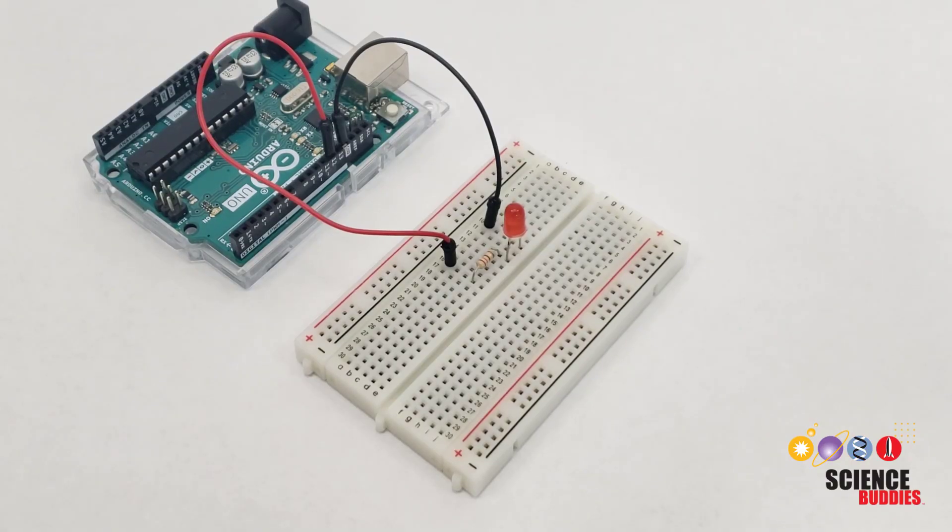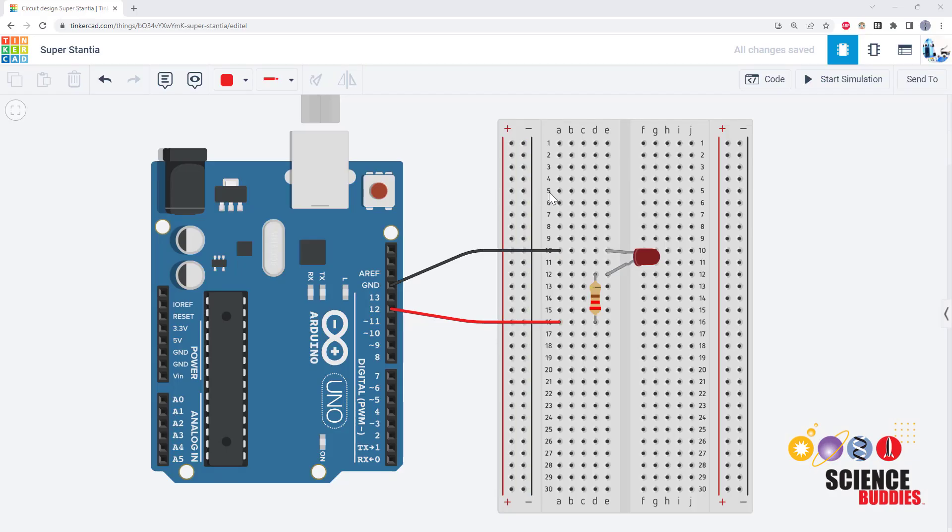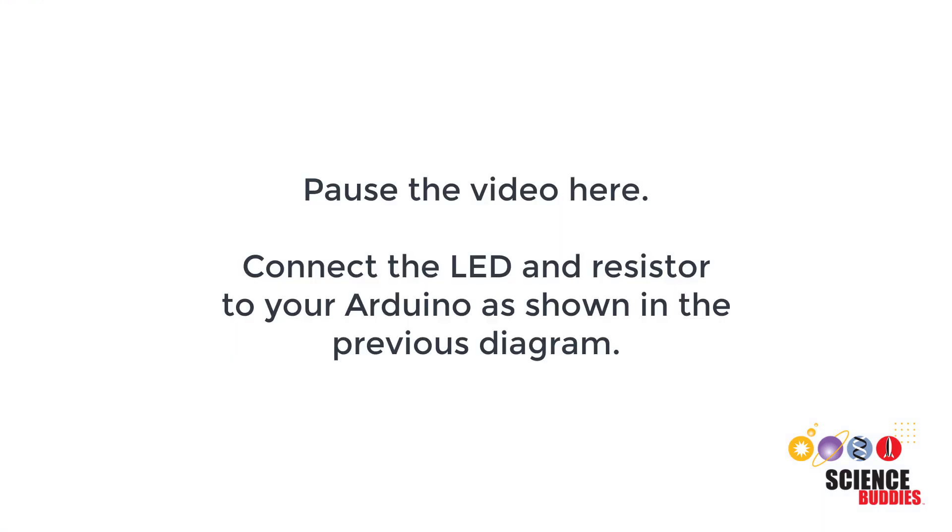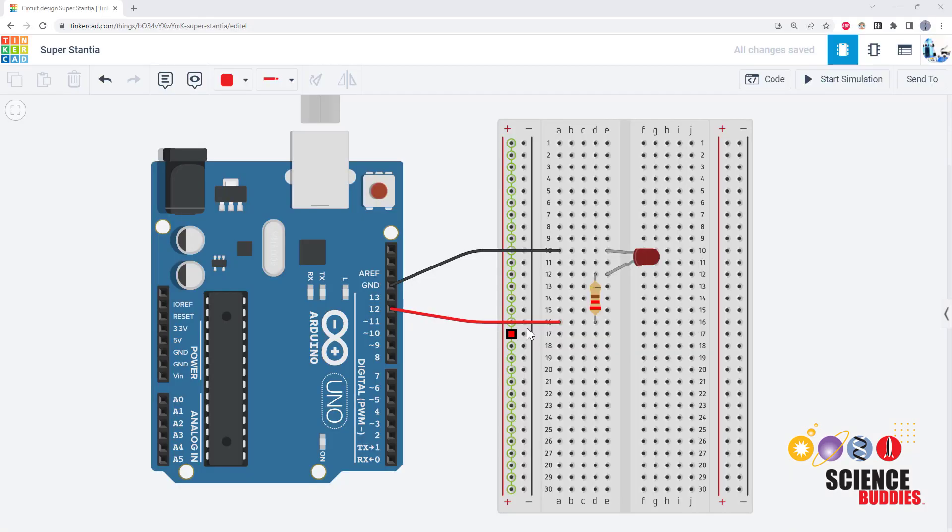Now that we've built the circuit, we're ready to write the code to blink the LED. This is a breadboard diagram made with a computer program. It makes it a little easier to see exactly which hole each part goes in on the breadboard. You can use it as a reference when you build your circuit. If you need to finish building your circuit, pause the video here before you continue. Double check to make sure all of your wiring is correct before you continue.